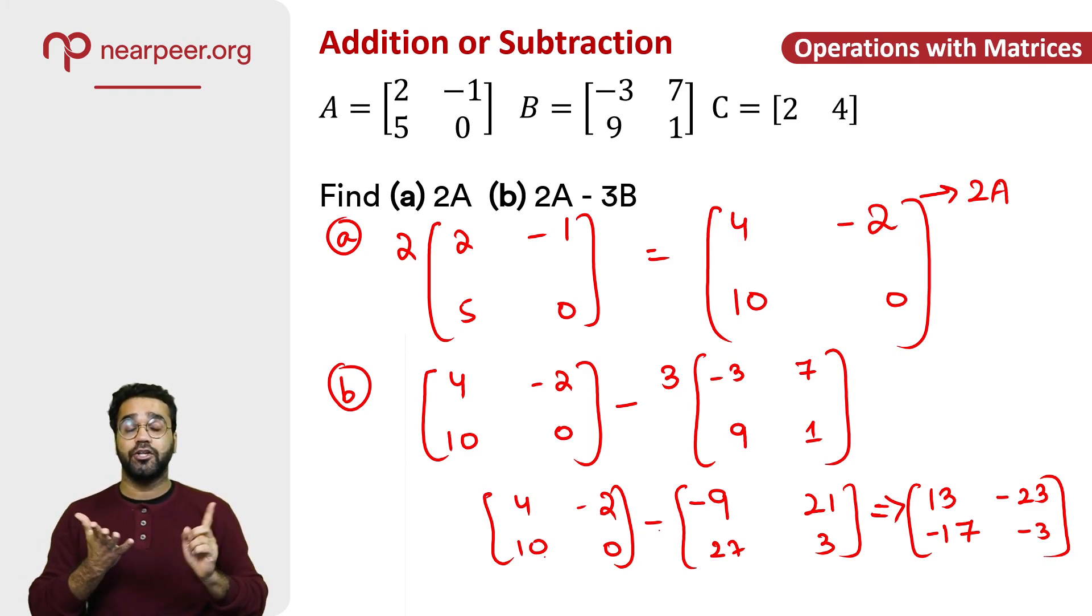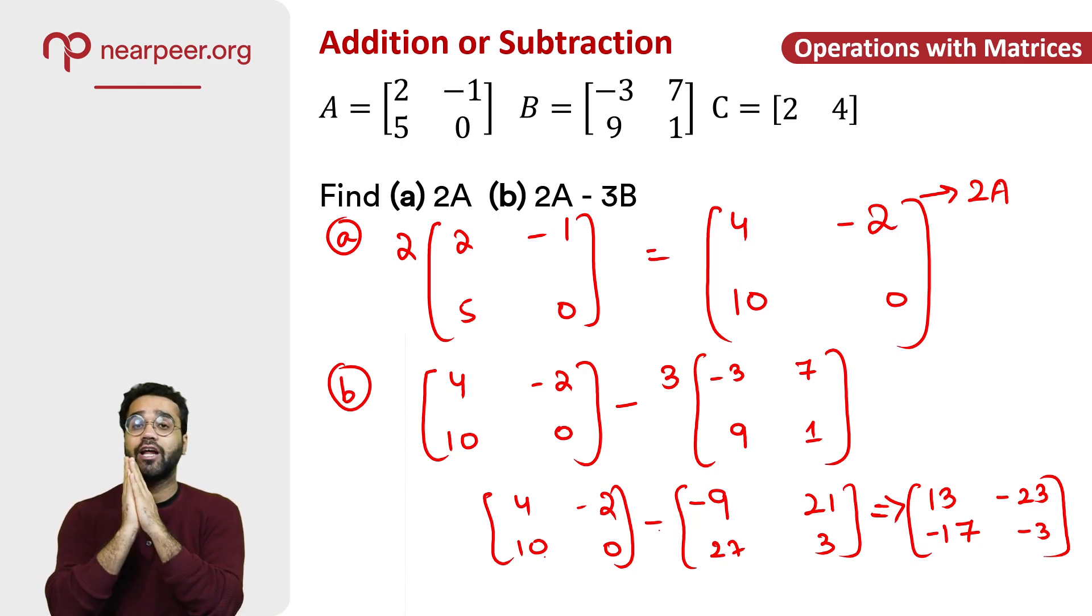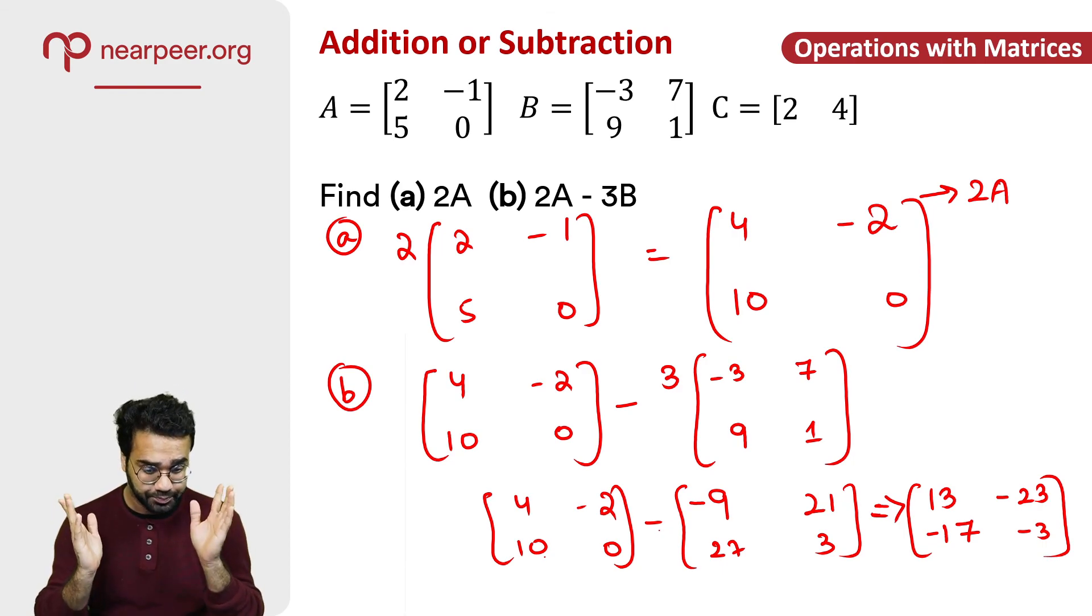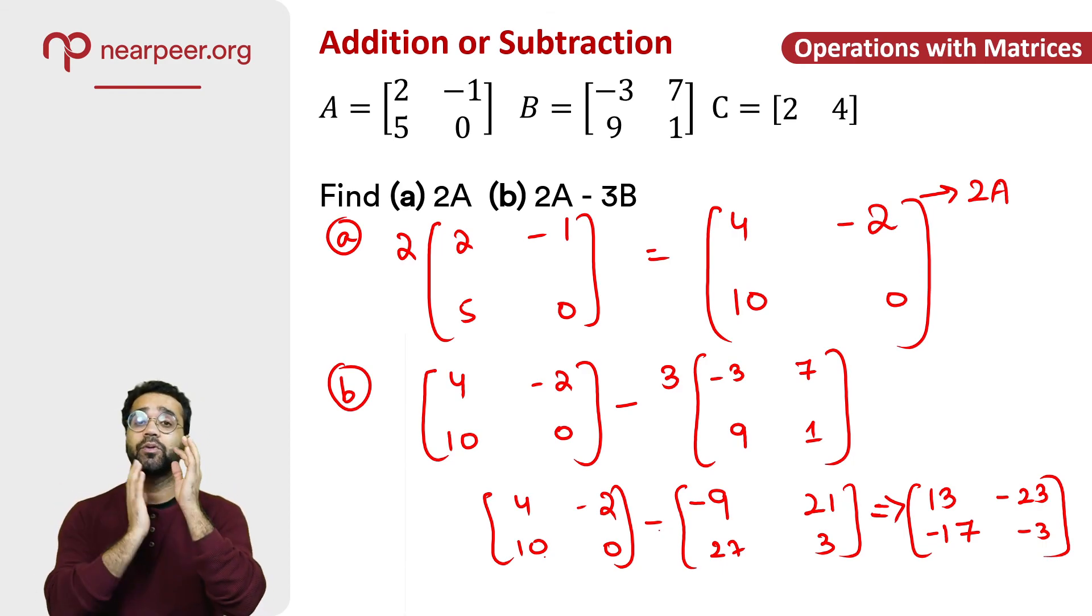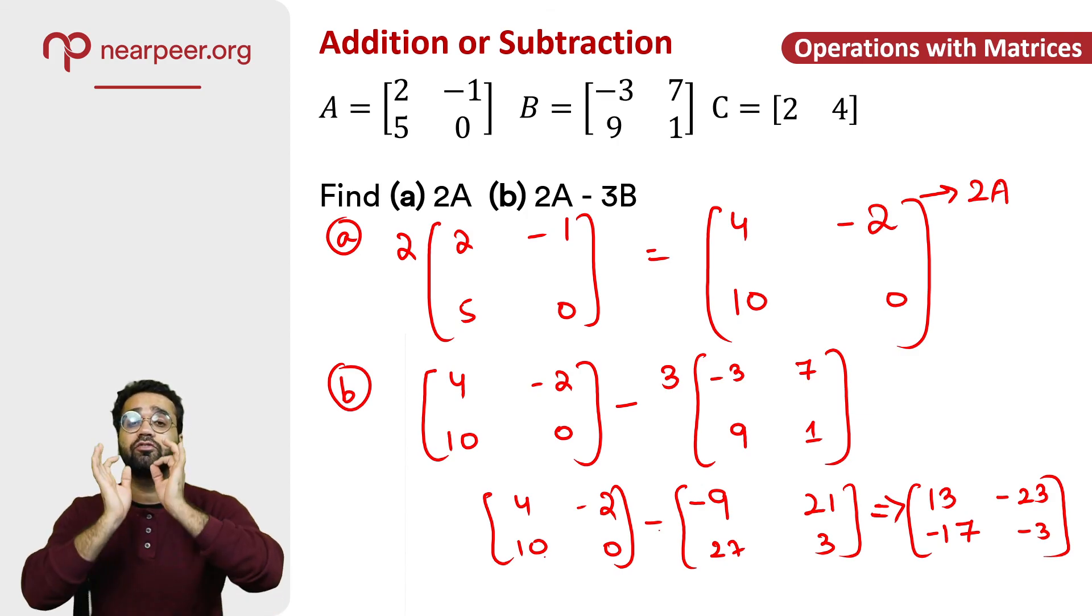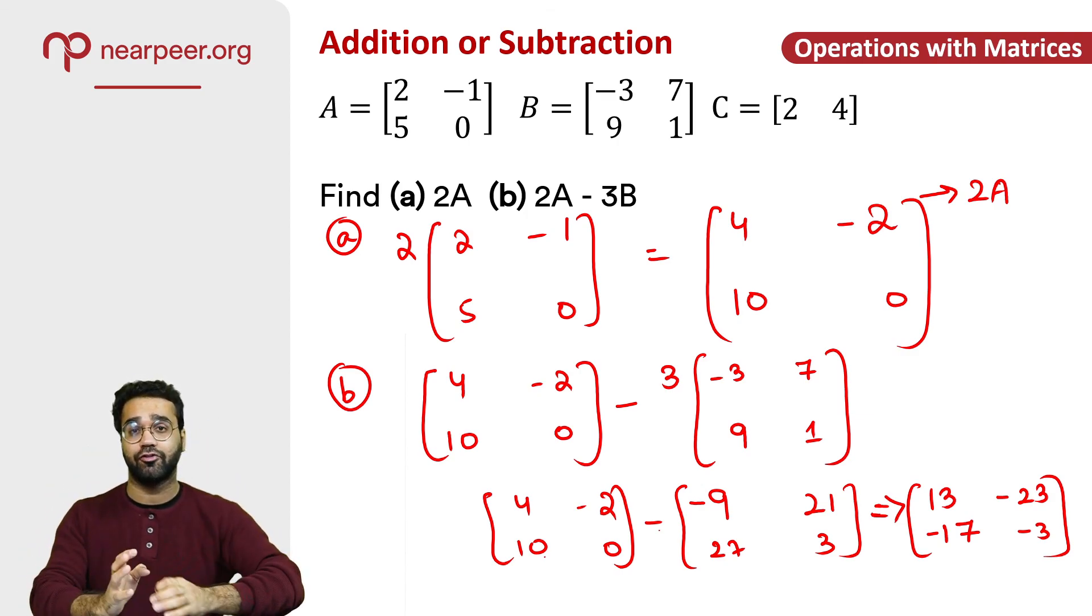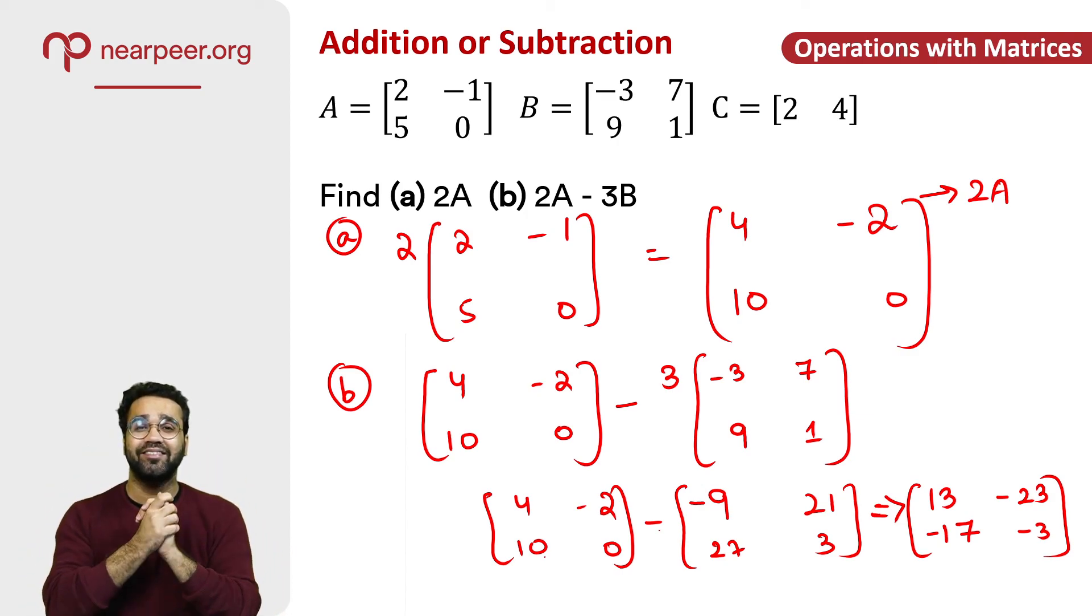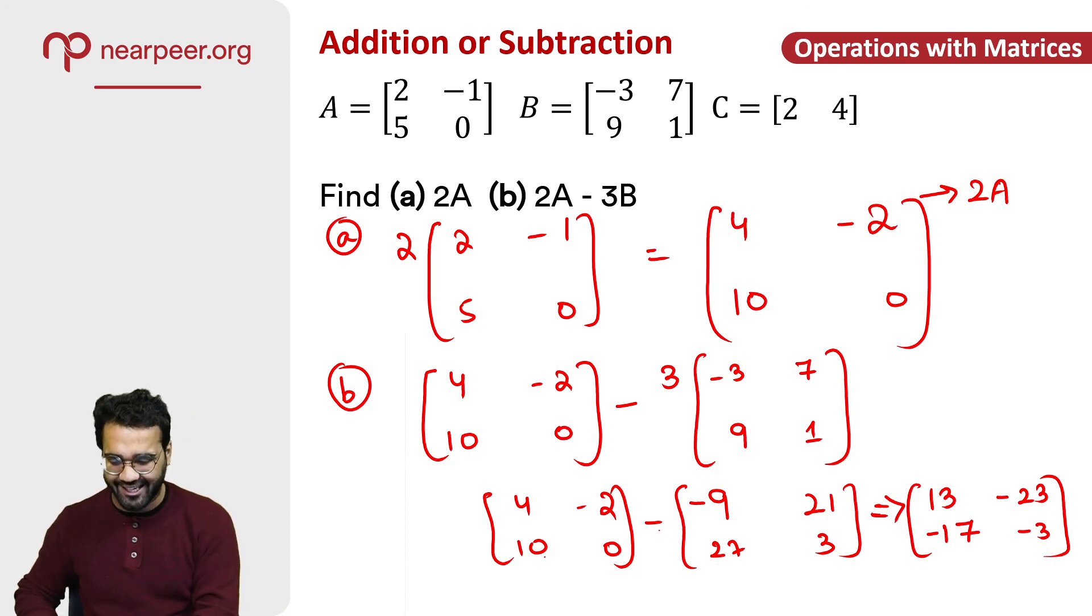And that is how we add or subtract. So for addition and subtraction, I need to have the same order between two or more than two matrices. If you do not have the same order, you cannot add or subtract them. Secondly, whenever you have any number you multiply with the matrix, you multiply each value in the matrix by that value. That's it guys. Keep learning. Goodbye. Take care.